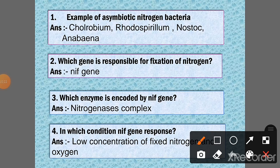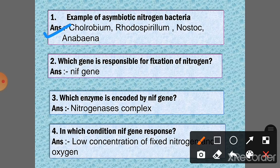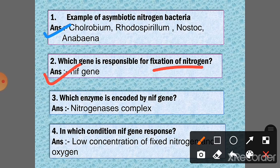Question number one: Example of a symbiotic nitrogen bacteria. Answer: Chlorobium, Rhodospirillum, Nostoc, and Anabaena. Question 2: Which gene is responsible for fixation of nitrogen? Answer: nif gene. nif gene found in nitrogen-fixing bacteria like cyanobacteria.